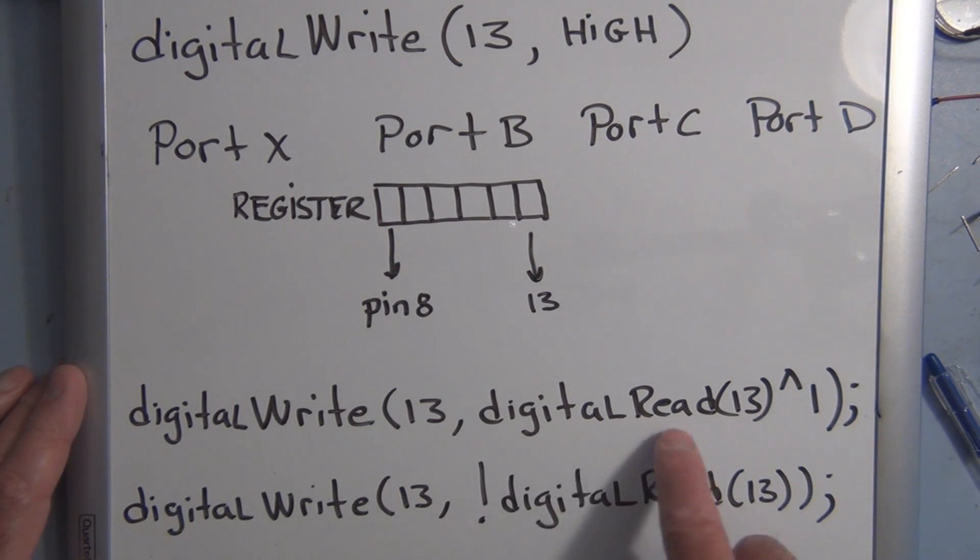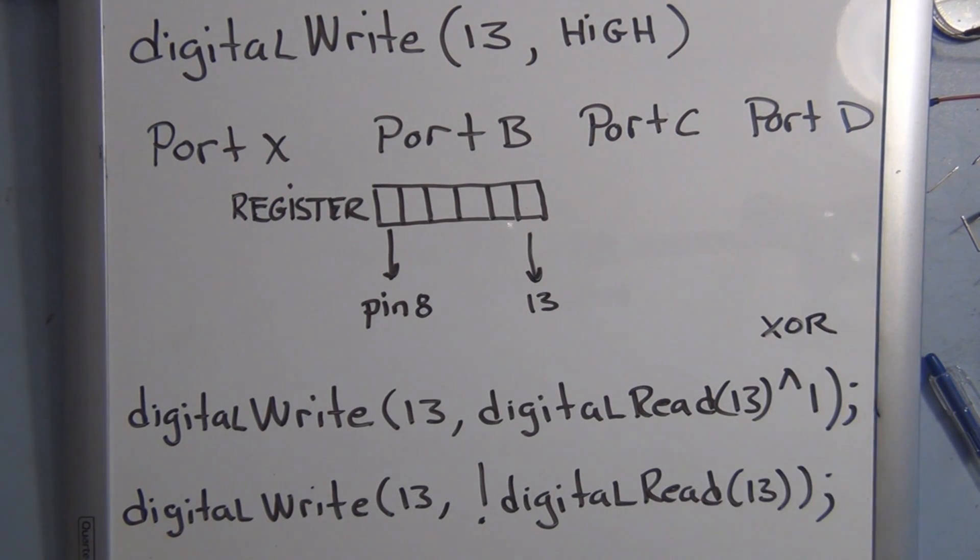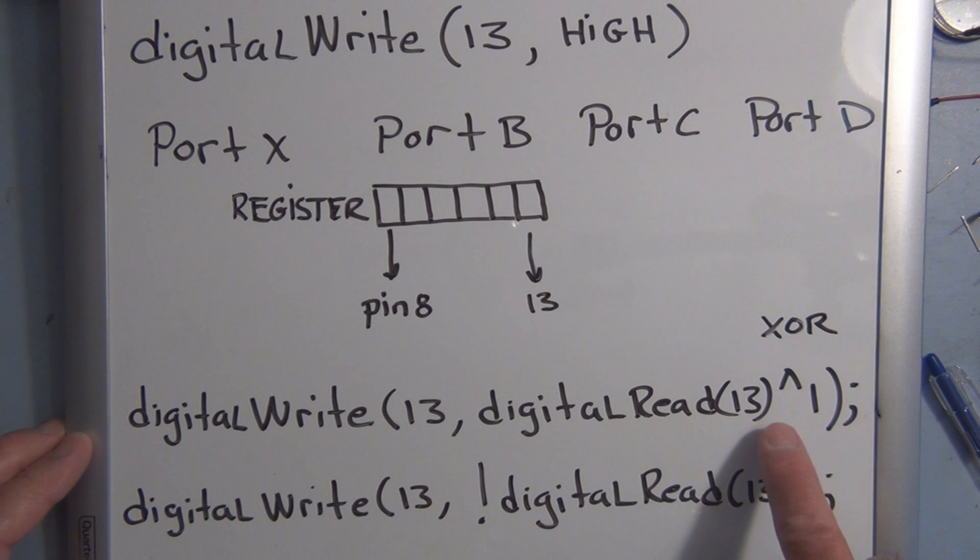Where if a digitalRead, depending on the value that it returns, you can either use this bitwise operator, which is XOR. If a 0 is returned, it will give us a 1, so a 0 will be XORed with the 1 producing a 1. And if digitalRead returns a 1, it'll be 1 exclusive OR with 1, which is a 0, and it'll keep on toggling.